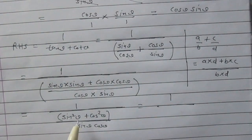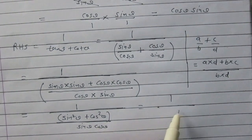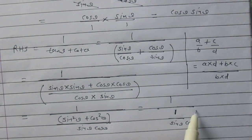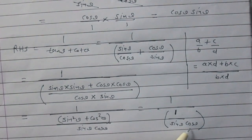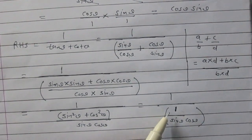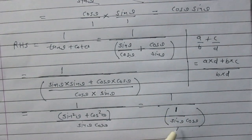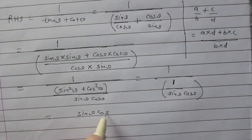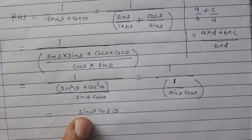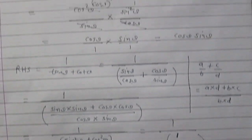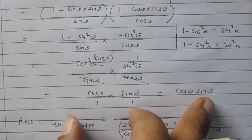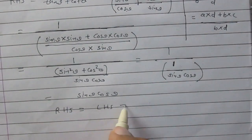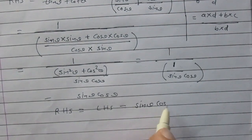According to the trigonometric identity, sin²θ plus cos²θ equals 1. So the denominator of the right-hand side becomes 1 divided by (1 / sin θ · cos θ), which equals sin θ · cos θ itself. Therefore, the right-hand side equals sin θ · cos θ, which equals the left-hand side. Hence RHS equals LHS, and the identity is proved.